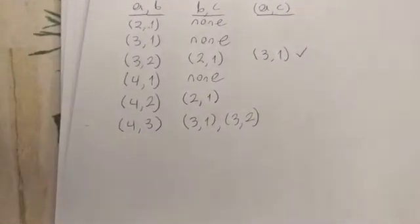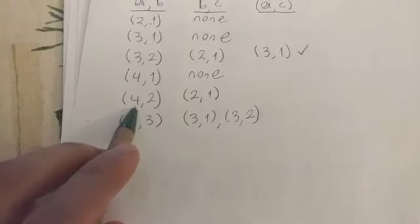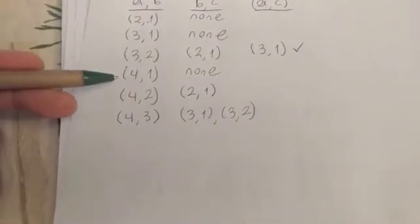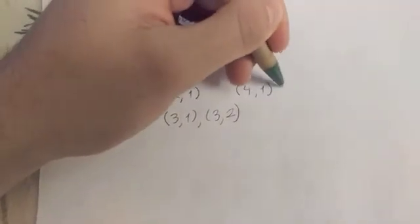Now let's skip down to (4,2). We have (4,2) and (2,1). So the outer ones are (4,1). And right up above here we have (4,1). So that one is good.